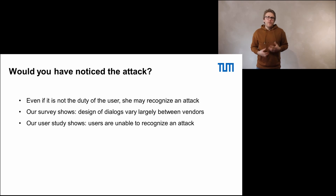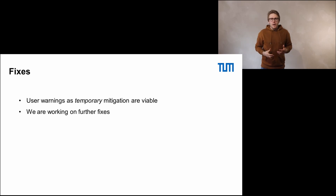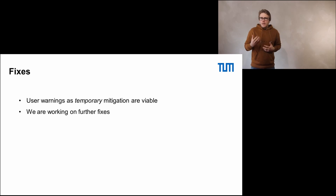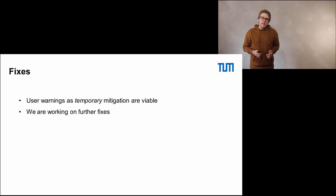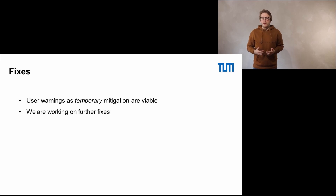But how could we fix the method confusion? At this point there is only a temporary fix available, namely to give the user clear warnings that this attack exists and to clearly indicate which pairing method is currently in use. However, this can only be seen as a temporary fix, and we are definitely in need of a conceptual fix in the future — which is also what we are working on right now.